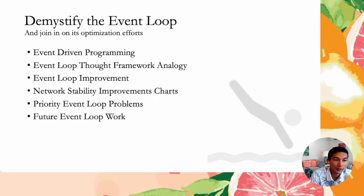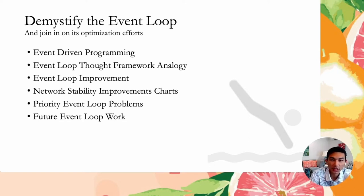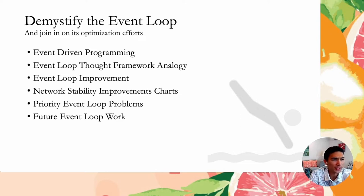Here's a quick summary of the things we want to cover: event-driven programming, which is fundamental to how Fluentbit works in terms of events and code; a thought framework to think about the event loop that we've been using at AWS; the event loop improvement; a network stability improvement chart; priority event loop problems; and future work that we can all work on to further optimize the Fluentbit event loop.